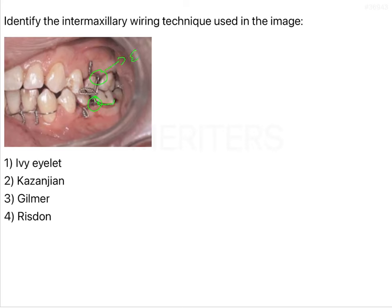So there are eyelets, one observation. Second observation from distal side there are threaded wires which have been threaded in these eyelets and then these two eyelets have been secured by vertical or we can say the straight ligature wires. So that is the kind of intermaxillary wiring technique which we have seen here.